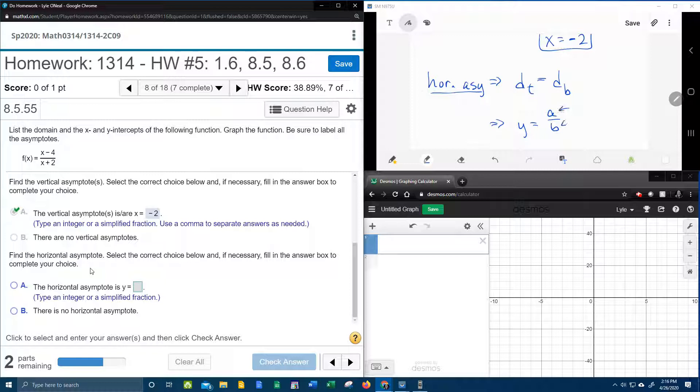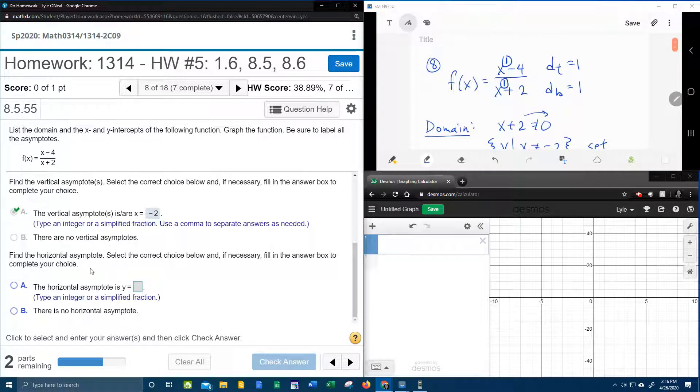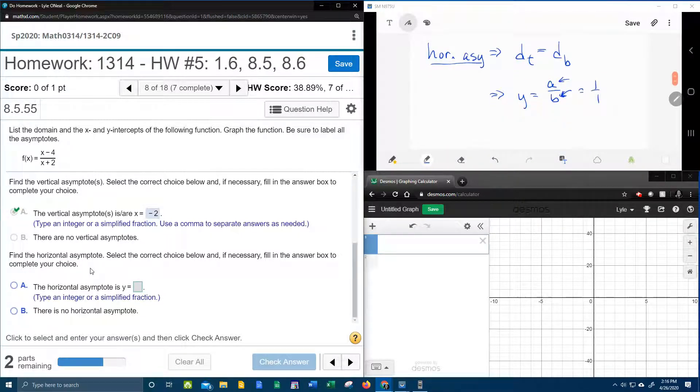Now what are a and b? Well, a is the lead coefficient of the numerator. So the number in front of the x up top, that is a, and the number in front of the x in the bottom, that is b. Do you see those are the lead coefficients? They're the numbers in front of the letters that had the biggest powers. And so a and b are both 1.